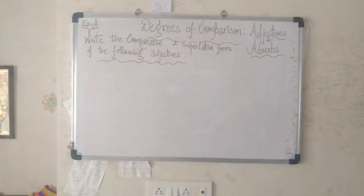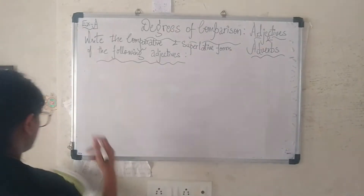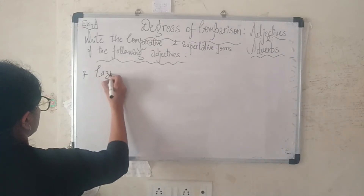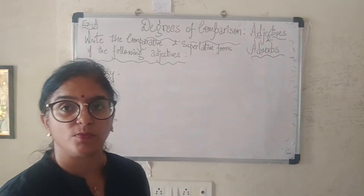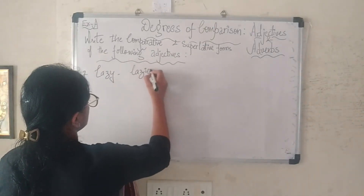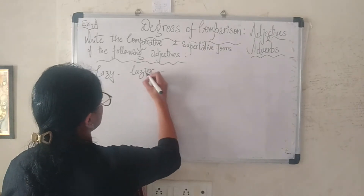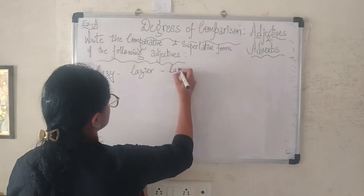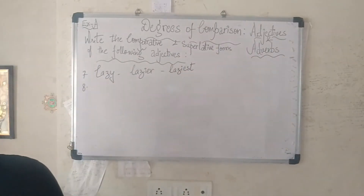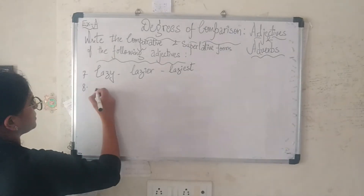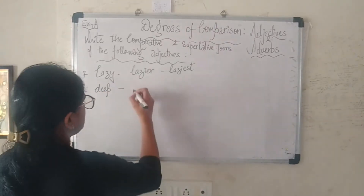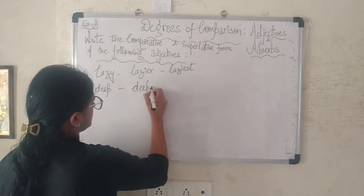Let's move on to number seven: 'lazy'. The comparative form of 'lazy' — 'y' is removed and you write 'i-e-r', so 'lazier', and 'i-e-s-t' in the superlative, so 'laziest'. The eighth adjective is 'deep' (d-double e-p): 'deeper' and 'deepest'.